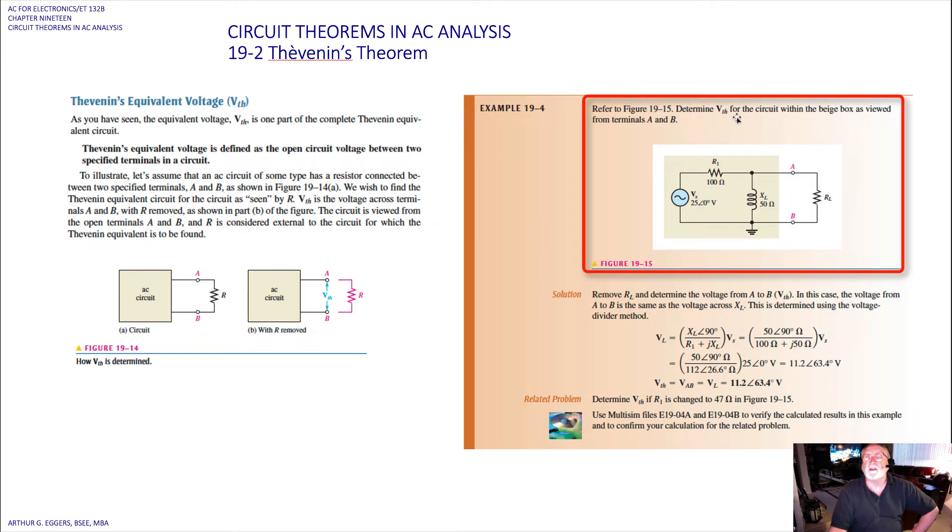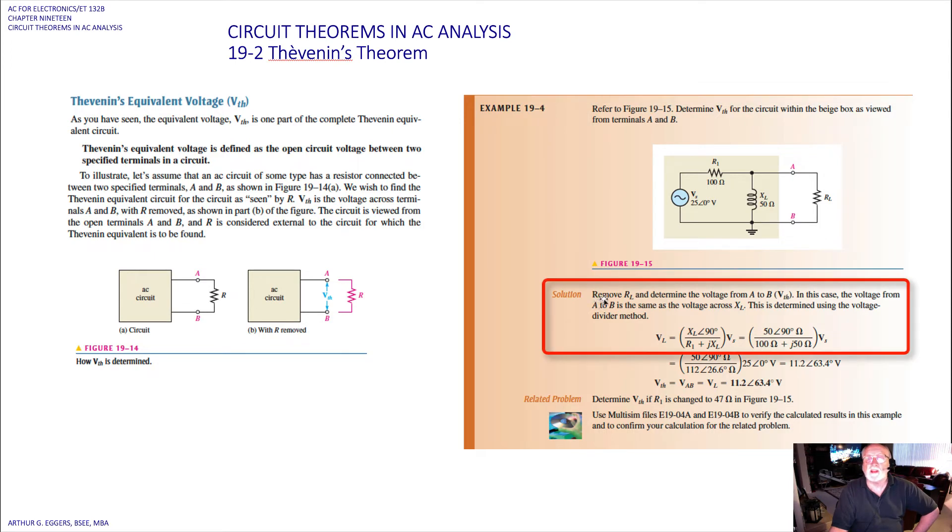In this problem we're going to determine the Thevenin equivalent for the circuit within the beige box as viewed from terminals A and B. The first thing we do is remove that load resistor and determine the voltage from A to B, i.e., V_Thevenin. In this case, the voltage from A to B is the same as the voltage across the inductor X_L. This is determined using the voltage divider rule. So the load V_load is equal to X_L∠90° divided by R1 + jX_L times the source voltage V_s, that's our 25 volt.